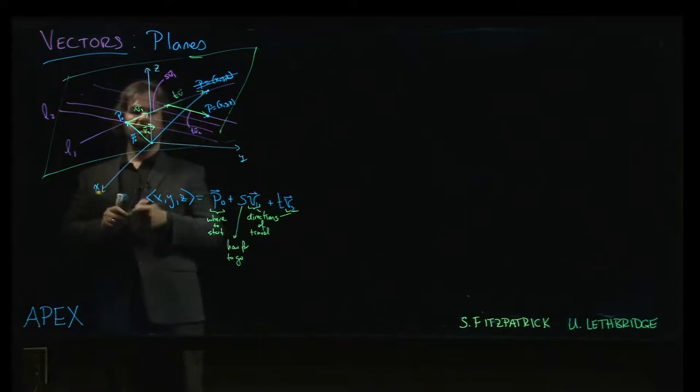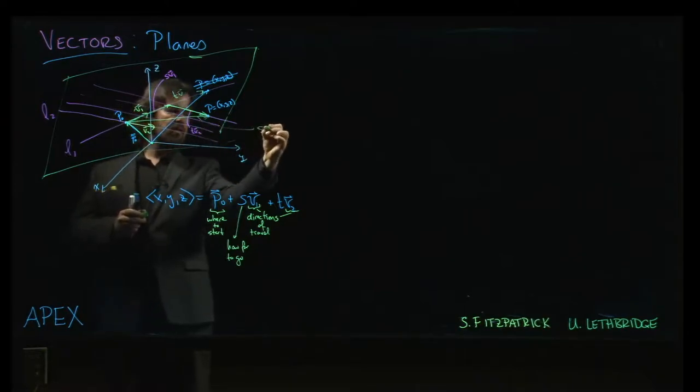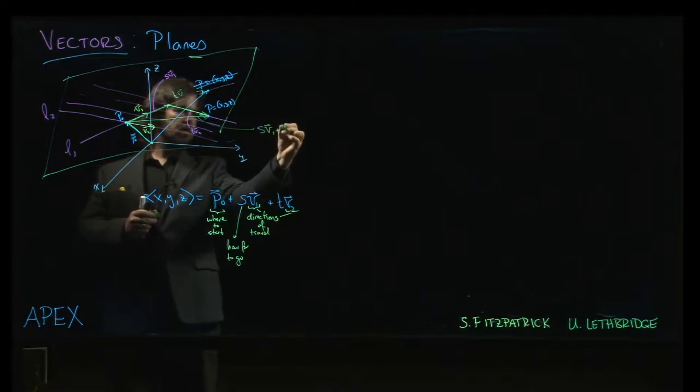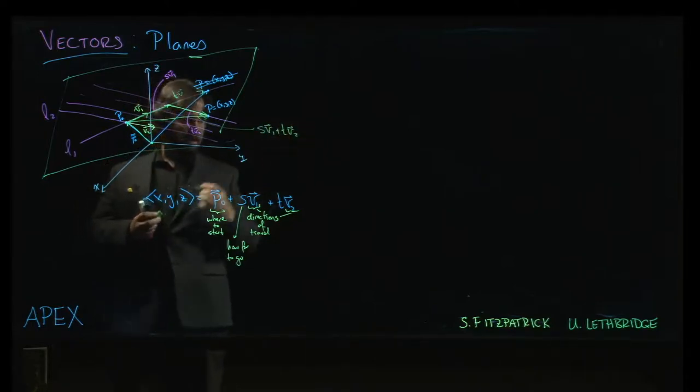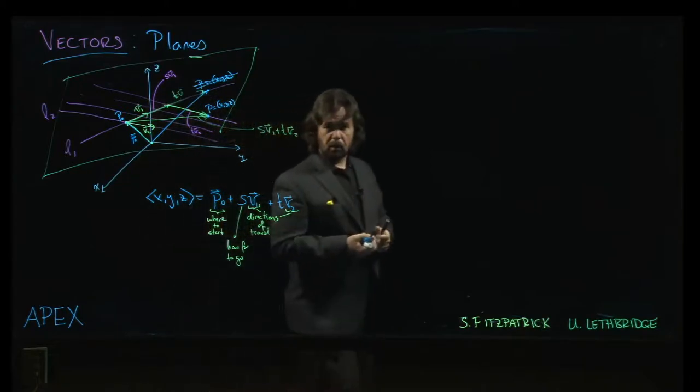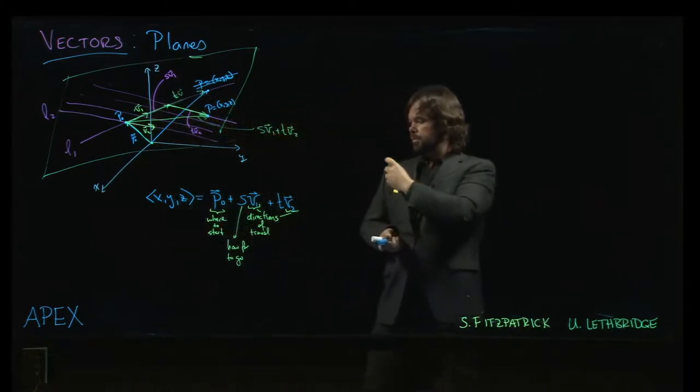And, so, now, by combining those two directions, we can move anywhere in the plane. So, in algebra, we call this a linear combination of v1 and v2. And, we can head directly from the initial point to that point, p. We get this vector here. So, that is s times v1 and t times v2.